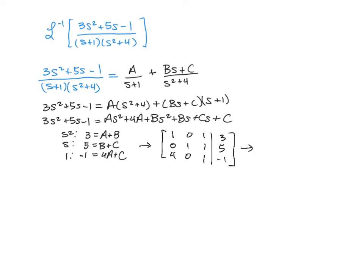And then with our graphing calculator, with the RREF function, we're going to end up with A being equal to negative 3 fifths, B being equal to 18 fifths, and C equals 7 fifths.